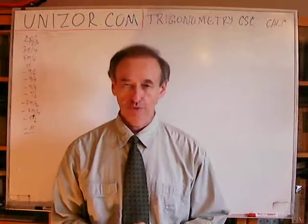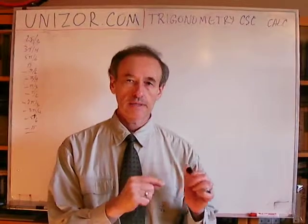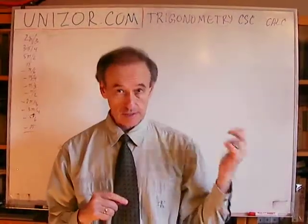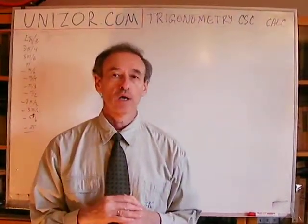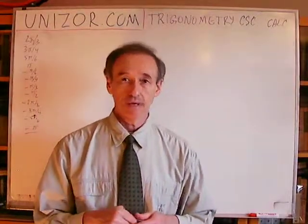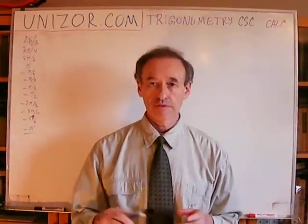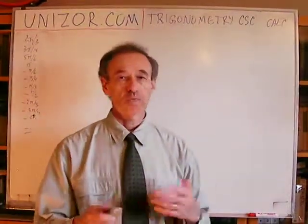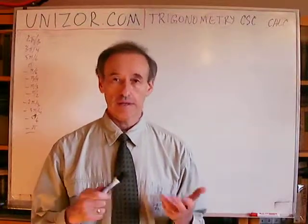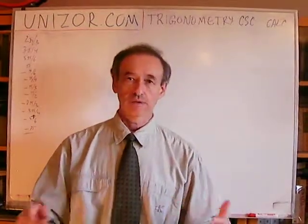Hi, I'm Zor. Welcome to a new Zor education. This is the last lecture in a mini-series about what values trigonometric functions — in this case cosecant — take for all the basic angles. Basic angles are those where we can calculate the value of trigonometric functions using some algebra and some theorems of geometry. It's all based on two main angles, like 30 degrees and 45 degrees in the right triangle. Everything else is basically derived from this.